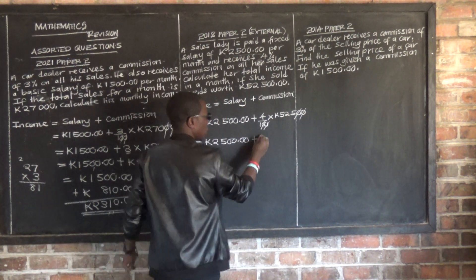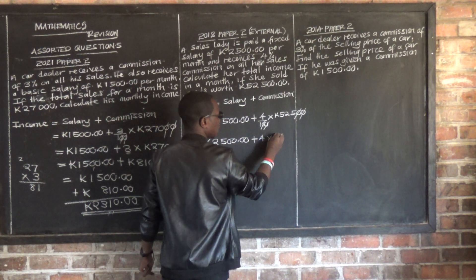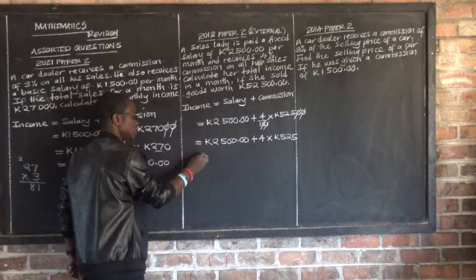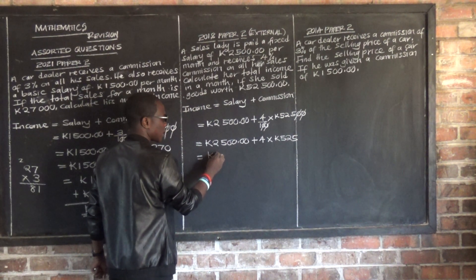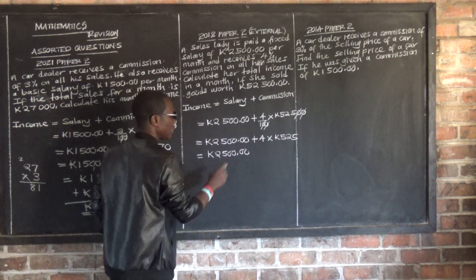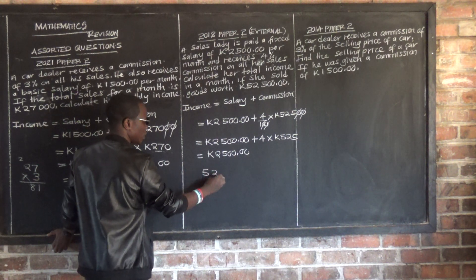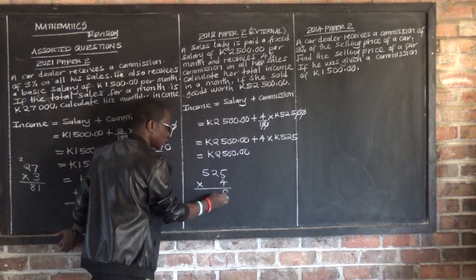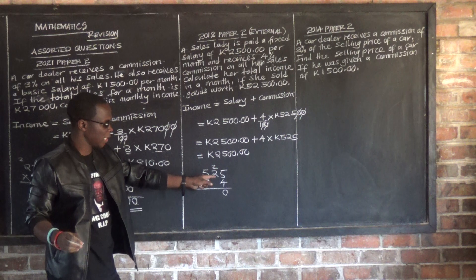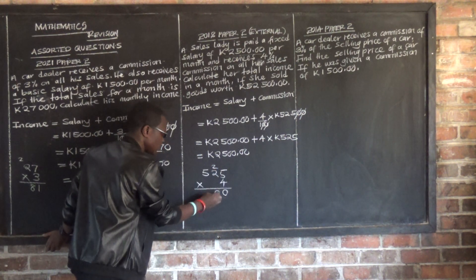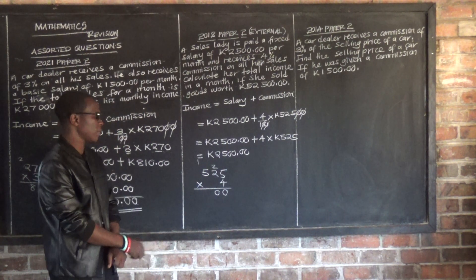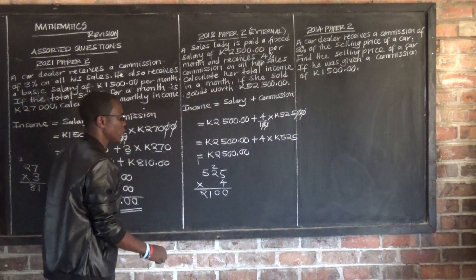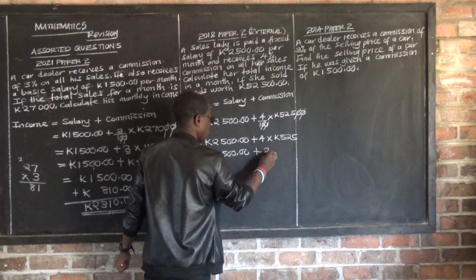After cancelling zeros we are left with 4 multiplied by $525. Wait — simplifying: 4 multiplied by 5,000 gives 20,000... working through: 4 times 5 is 20, carry 2; 4 times 2 is 8 plus 2 is 10; so the commission works out to $2,100.